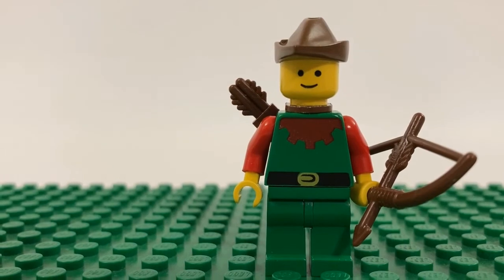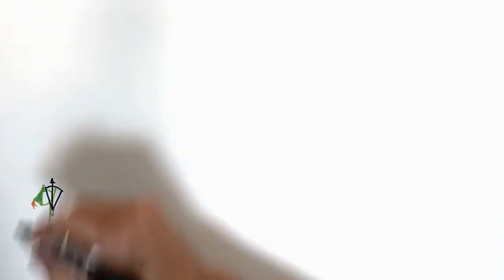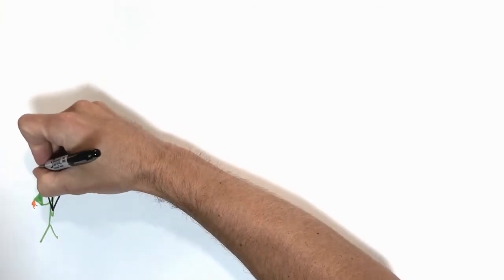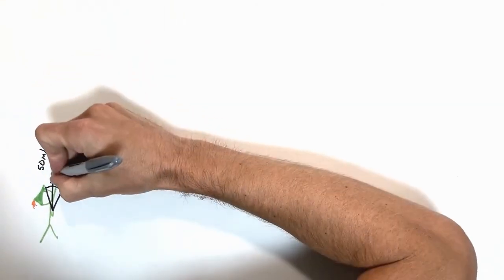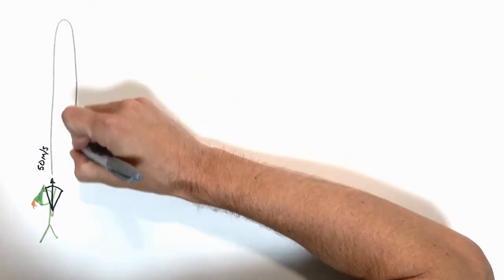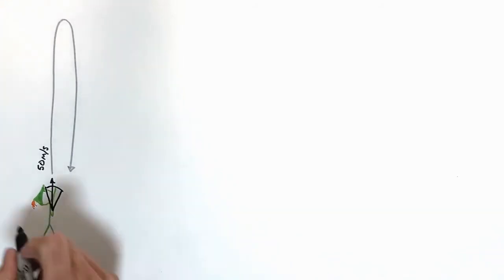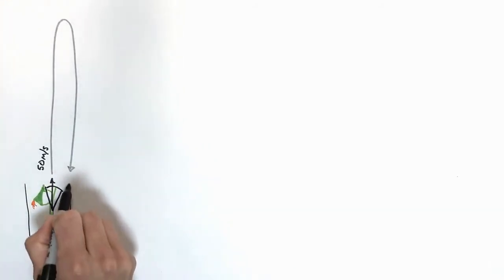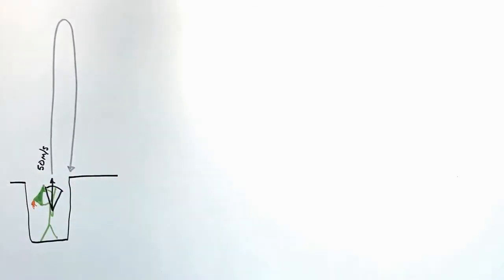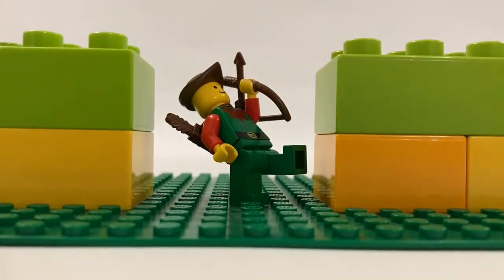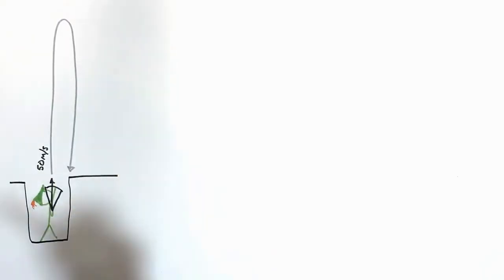In this problem, we're going to have an archer fire an arrow straight up in the air. Our archer fires this arrow at an initial speed of 50 meters per second. The arrow goes straight up, turns around, and falls back down. We want to say the arrow starts and finishes at the same height — so we'll say the arrow was fired from some kind of pit. The important point is that the arrow starts and finishes at the same height.